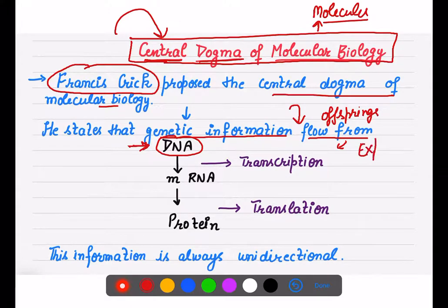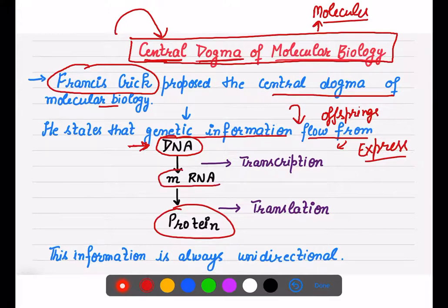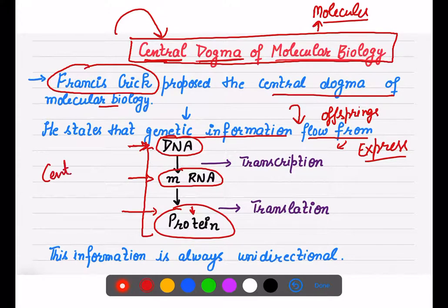But genetic information will not be expressed until it changes into protein. So DNA first changes into mRNA and then mRNA changes into protein. This whole process — the changing of DNA to mRNA and mRNA into protein — is known as the Central Dogma in molecular biology, because here we are talking about two molecules: DNA and RNA.